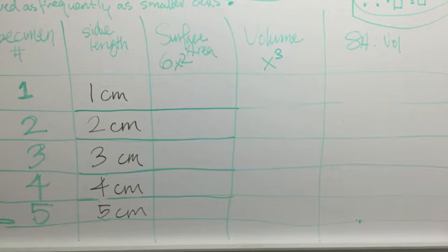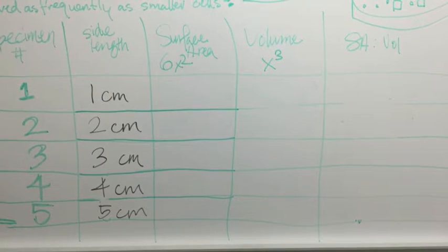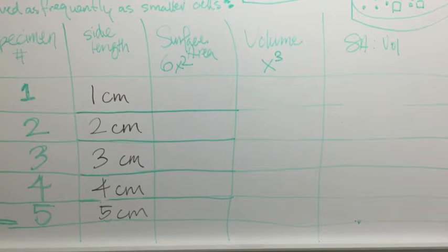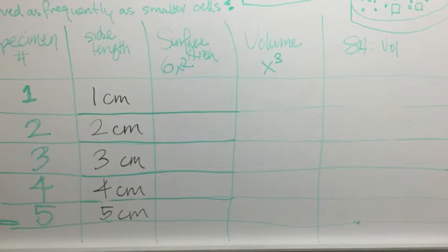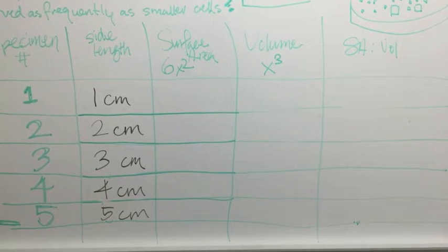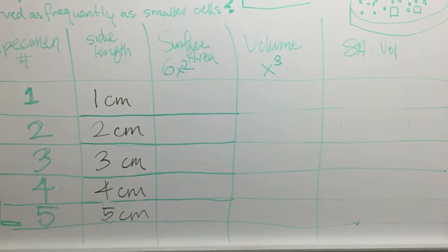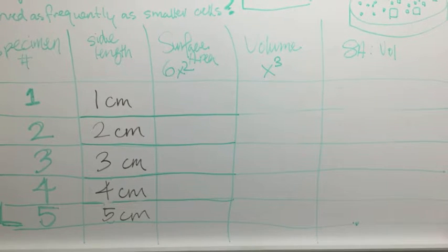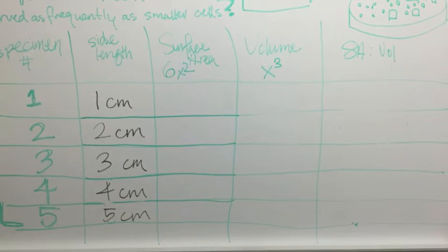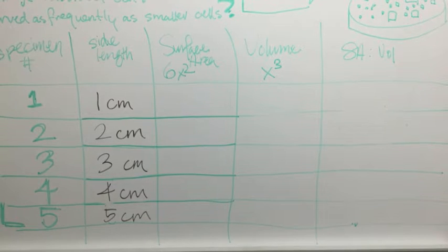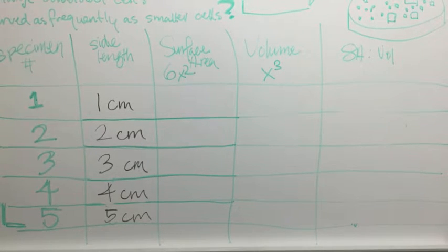To determine surface area and volume, thankfully we can use the formulas for a cube since we're working with cuboidal cells. To refresh from geometry class, surface area can be calculated from the formula 6x², where x is the side length of a cube, or in this case, our cuboidal cells.